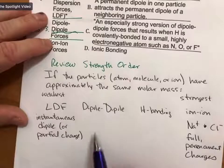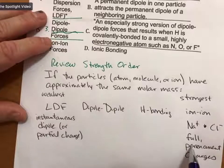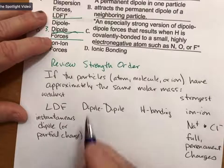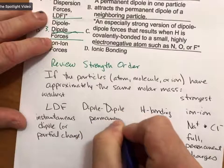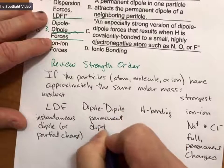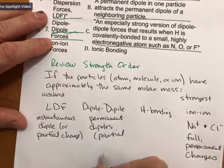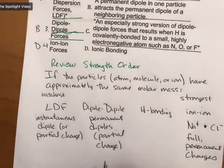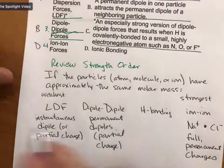And then in between, we have dipole-dipole, which is permanent dipoles or permanent partial charges. Permanent dipoles. Where, again, it's partial charge. That's what a dipole is. It's a partial charge.